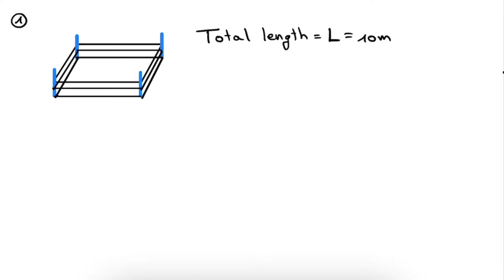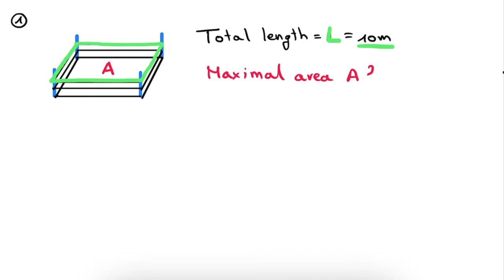With the well-being of your chickens in mind, you pose yourself the following question. Given that the total length of the fencing is 10 meters, what is the largest area within this fencing that you can make, given that it has to be a rectangular fencing? Or in more abstract terms, what rectangle with a circumference of 10 meters has the largest surface?